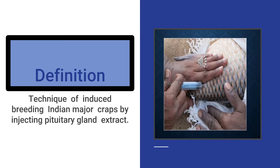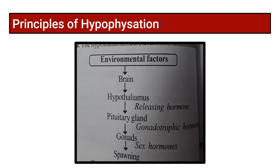The second topic is the principles of hypophysation. Environmental factors — our outer surrounding factors — stimulate the hypothalamus of the brain. The hypothalamus then secretes releasing hormones, which in turn stimulate the pituitary gland.